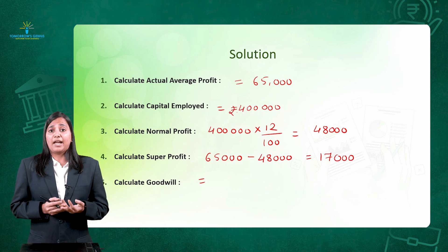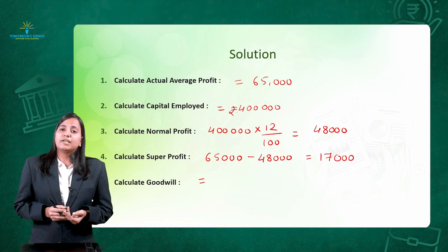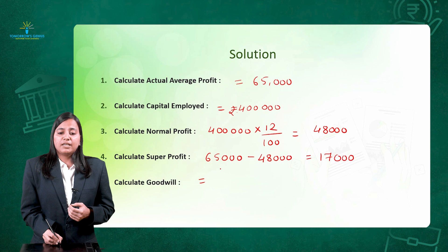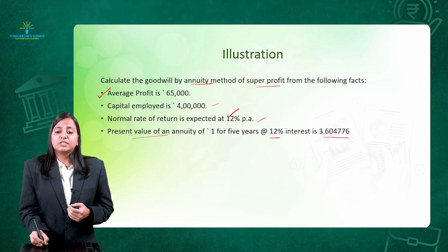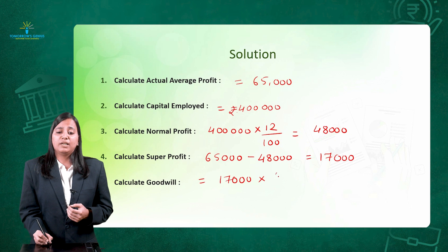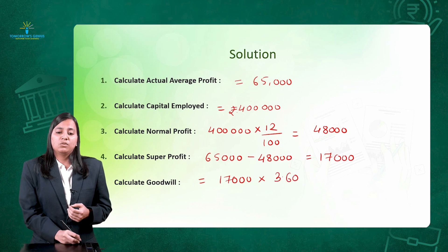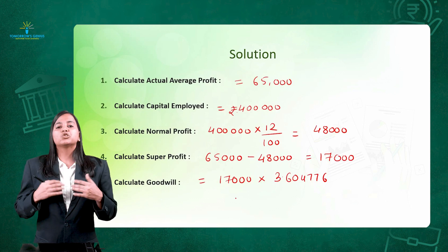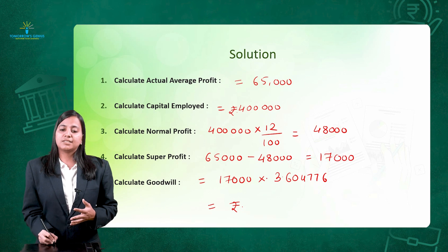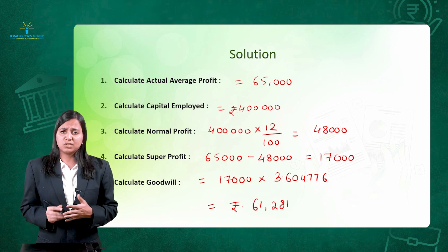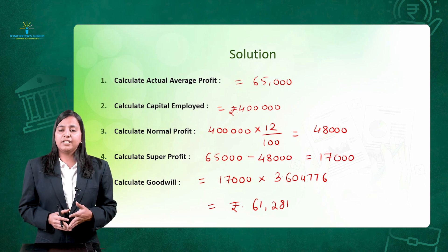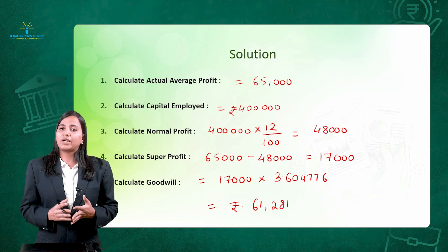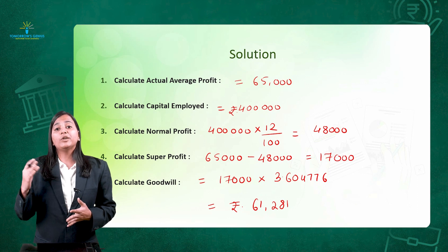Once you have the super profit, calculate the goodwill. Under the annuity method, goodwill equals super profit multiplied by annuity factor. In our case, the annuity factor at 12% interest is 3.604776. So goodwill amounts to approximately ₹61,281 — you do not write the decimal figures. This was a simple method to calculate goodwill using the super profit annuity method.